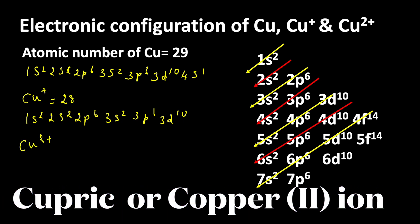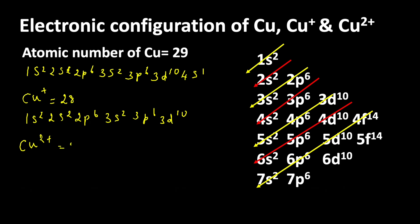Cu2+ ion is formed when copper loses two electrons. So 29 minus 2 equals 27 electrons.